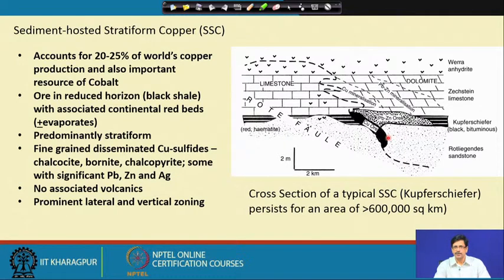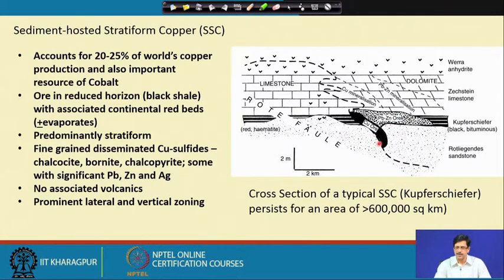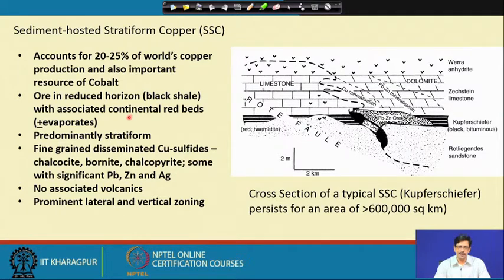The Kupferschiefer extends across Germany, Poland, and even into the UK. This prominent copper-bearing black shale horizon is not universally workable, but selected areas — especially where it is exposed in Poland and some other areas — have been actively exploited for copper and cobalt. The ore is in a reduced horizon of black shale with associated continental red beds and evaporites. The association with continental red beds is very prominent and critical to the SSC deposits.